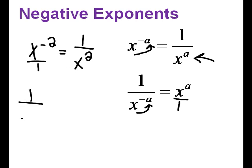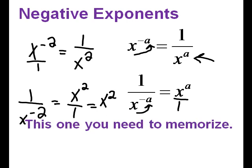Well, what happens if it's a negative exponent in the denominator? Well, it flips to the top and becomes positive. Now remember, we don't have to write x squared over 1. We would just call it x squared. And yep, this one you need to memorize.